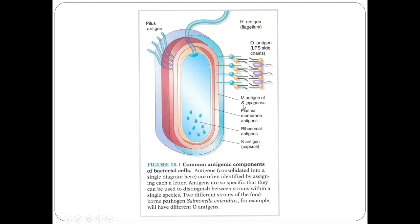Remember, Streptococcus pyogenes has the M antigen, while Streptococcus pneumoniae does not have the M antigen, so they don't belong to any of the Rebecca Lancefield groups. Other things that can be antigens: plasma membrane, ribosome, and capsule — for example E. coli K88, where K means capsule. So specific structures are antigens — the whole cell is not an antigen.